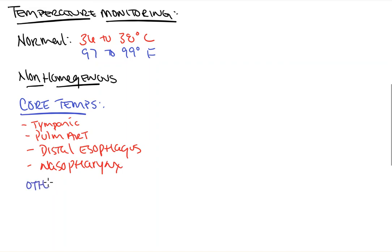Some other temperature sites that are commonly used that you'll see but are not quite as accurate are places such as the axilla, the skin, and the bladder. Now, the bladder, it should be known, is not actually a core temperature and is only a reliable reading when there is good urine flow.